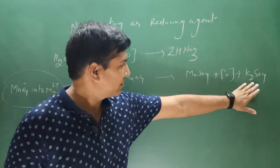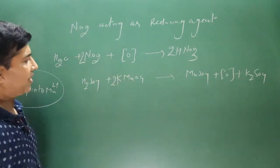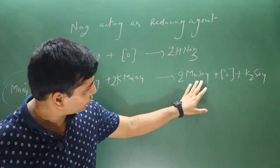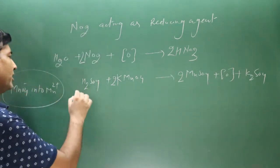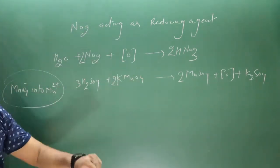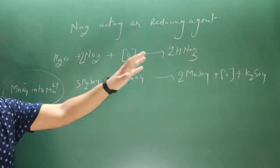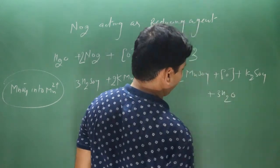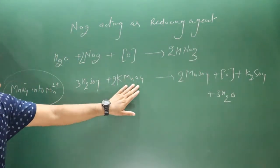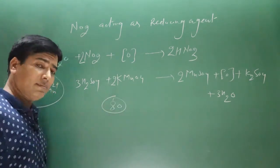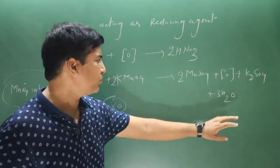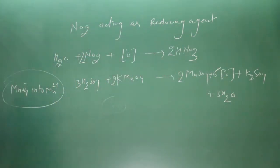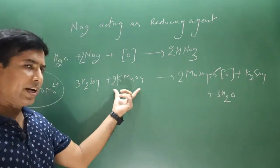Balancing: first potassium, then manganese, then sulfate ions (2 + 1 = 3 molecules of H2SO4). For hydrogen: 3 × 2 = 6H, so take 3 water molecules. Checking oxygen: 8 total oxygen needed; 3 already used, so multiply the NO2 equation by 5 → 5 nascent oxygen + 3 oxygen = 8 oxygen. Balanced.